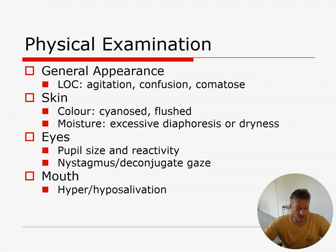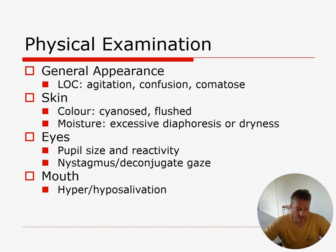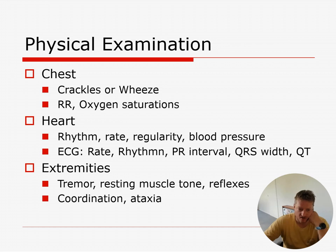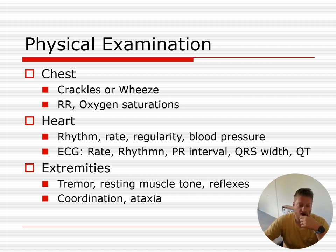When you examine a patient who's had a possible overdose of any toxicological agent, you'll want to check their general appearance, especially level of consciousness, skin, eyes — particularly pupil size and reactivity — and their mouth. Those four main things will often let you pick up any specific toxidrome. Listen to their chest, make sure they're saturating, check heart rate, get your ECG early for risk stratification, and then check extremities: muscle tone, reflexes, coordination, and any tremor.